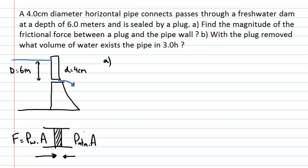We know that pressure increases with depth. The pressure at the top of the fluid is atmospheric, so pressure deeper in the water must be greater than atmosphere. Since the areas are the same, the water-side force is larger. If those were the only two forces, the plug would accelerate to the right, so there must be a friction force. The sum of all three forces must be zero — Newton's second law.